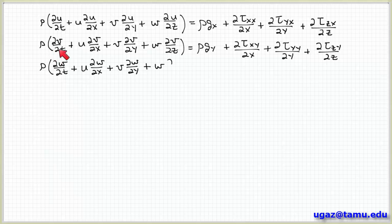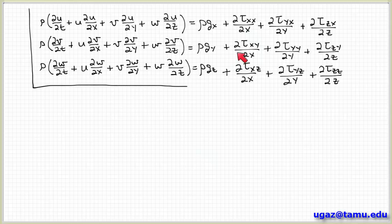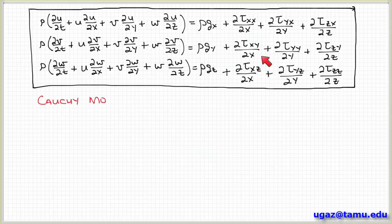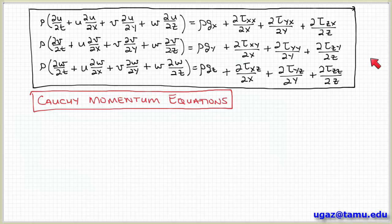For the Y component: rho times (partial of v with respect to time, plus u partial of v with respect to x, plus v partial of v with respect to y, plus w partial of v with respect to z) equals rho g_y plus the partial of tau_xy with respect to x, plus the partial of tau_yy with respect to y, plus the partial of tau_zy with respect to z. And similarly for the Z component. This system of partial differential equations is known as the Cauchy momentum equations.